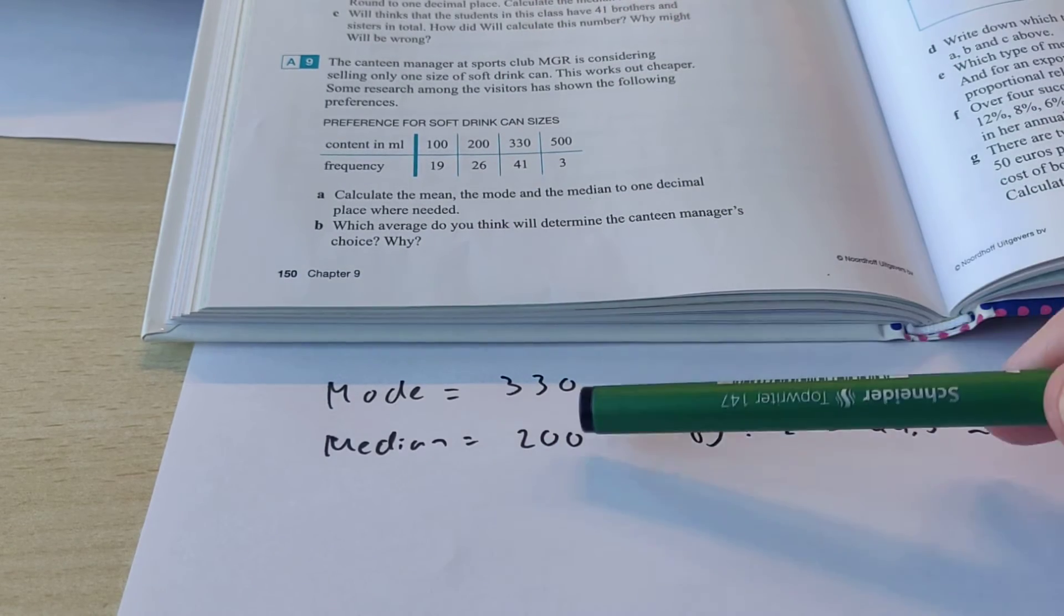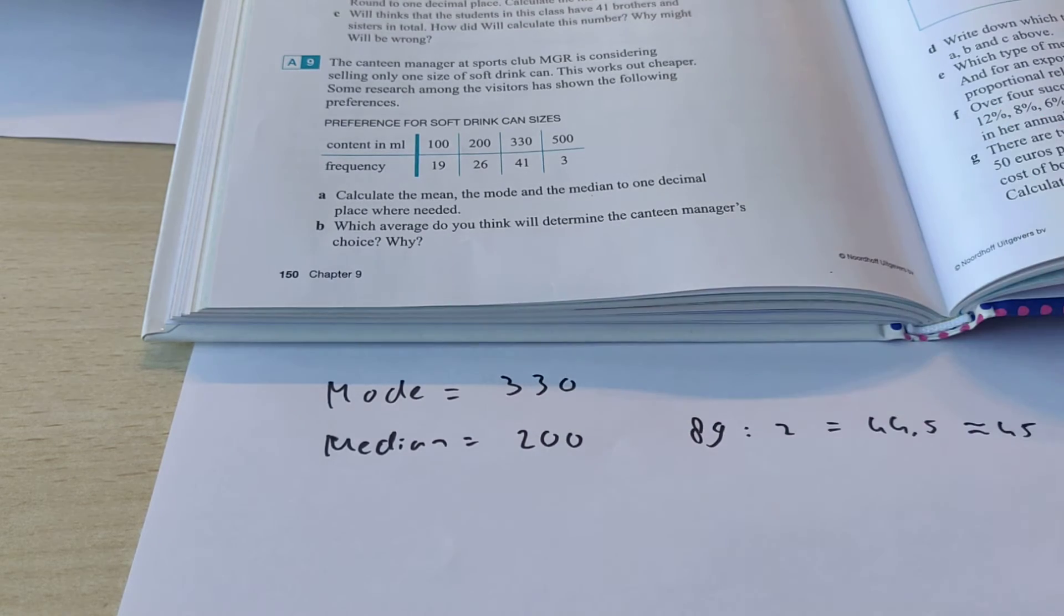So, half of the people want 200 or more in a can, and half of the people want 200 or less in a can.